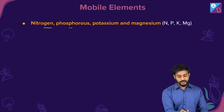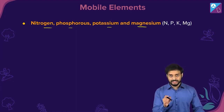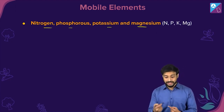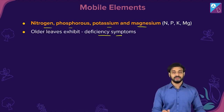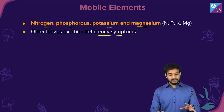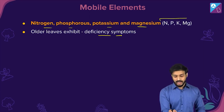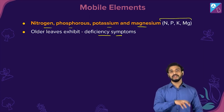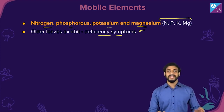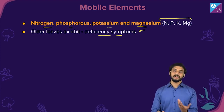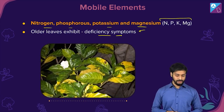Nitrogen, phosphorus, potassium, and magnesium — NPK and Mg — are mobile elements. So older leaves exhibit deficiency symptoms because these elements are moving from the older leaves to the newer leaves, leaving the older leaves with lower amounts of these elements.